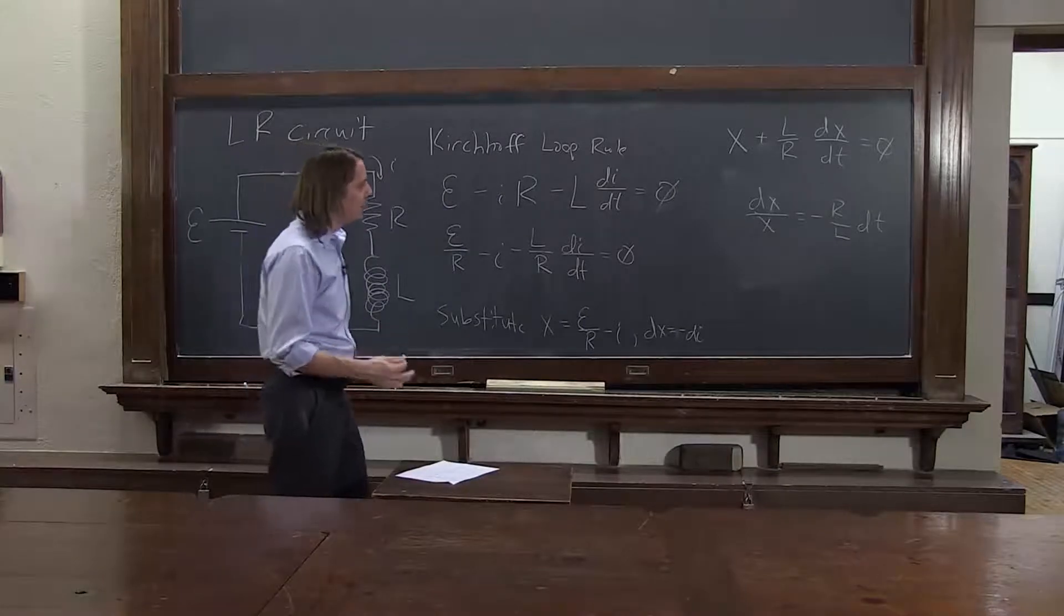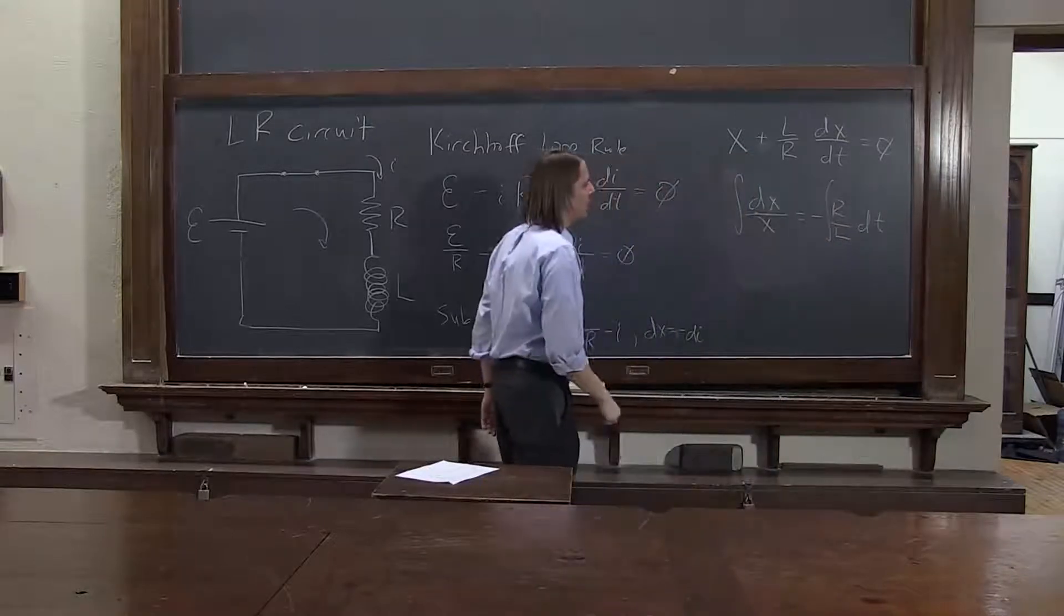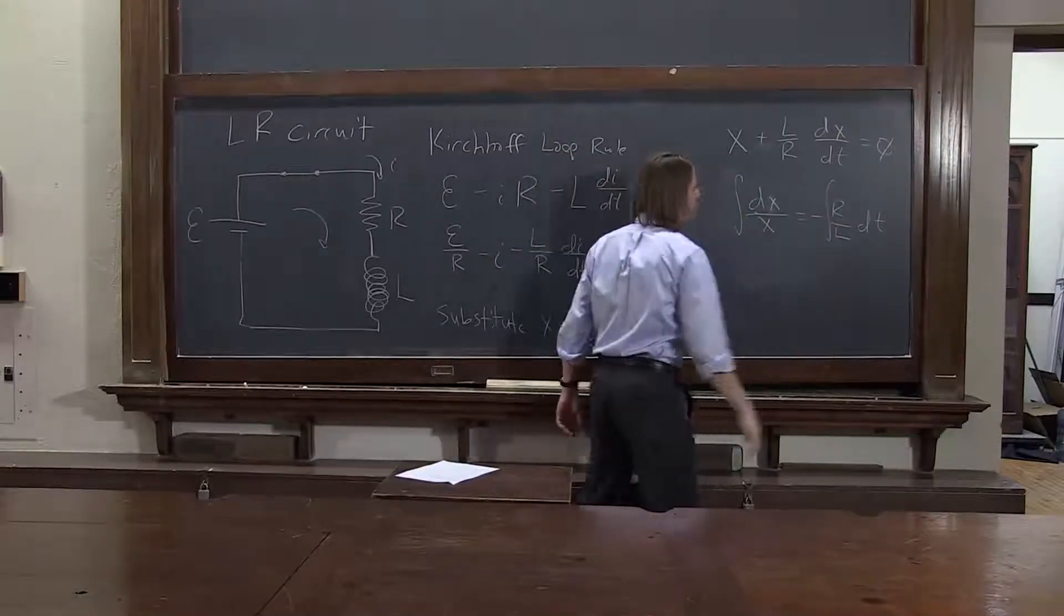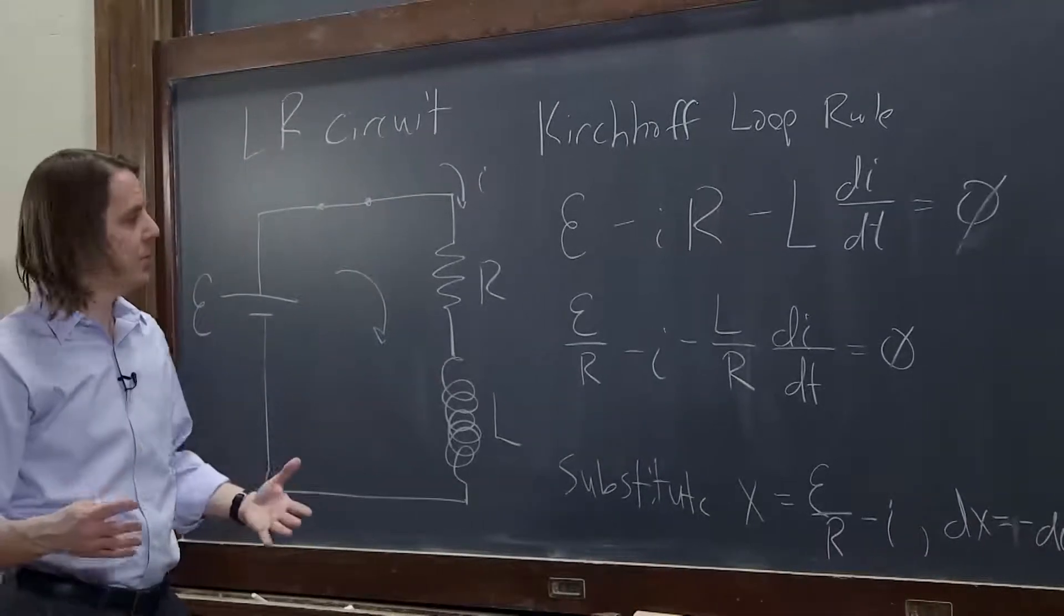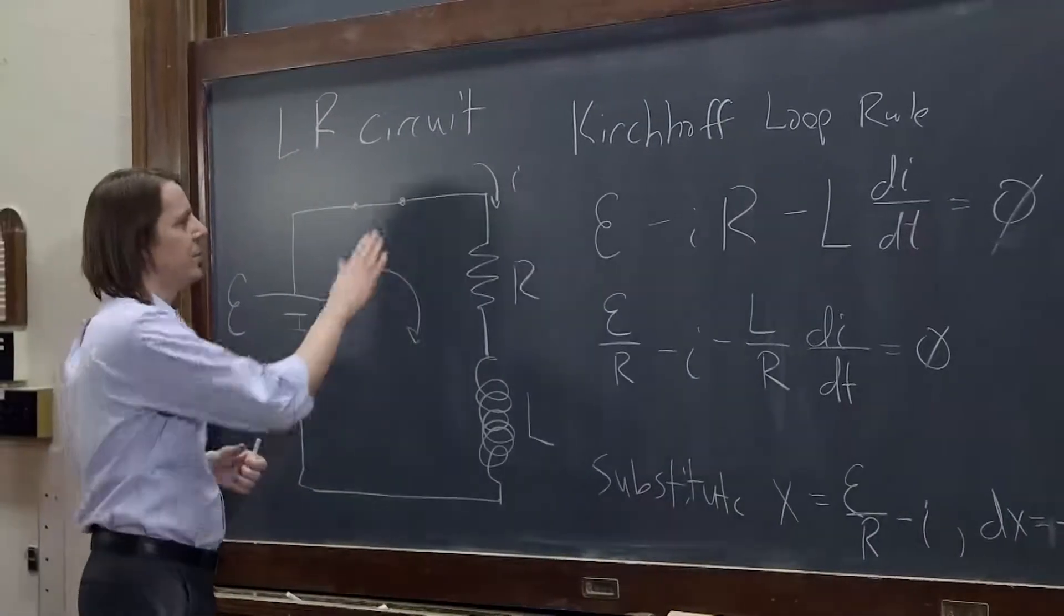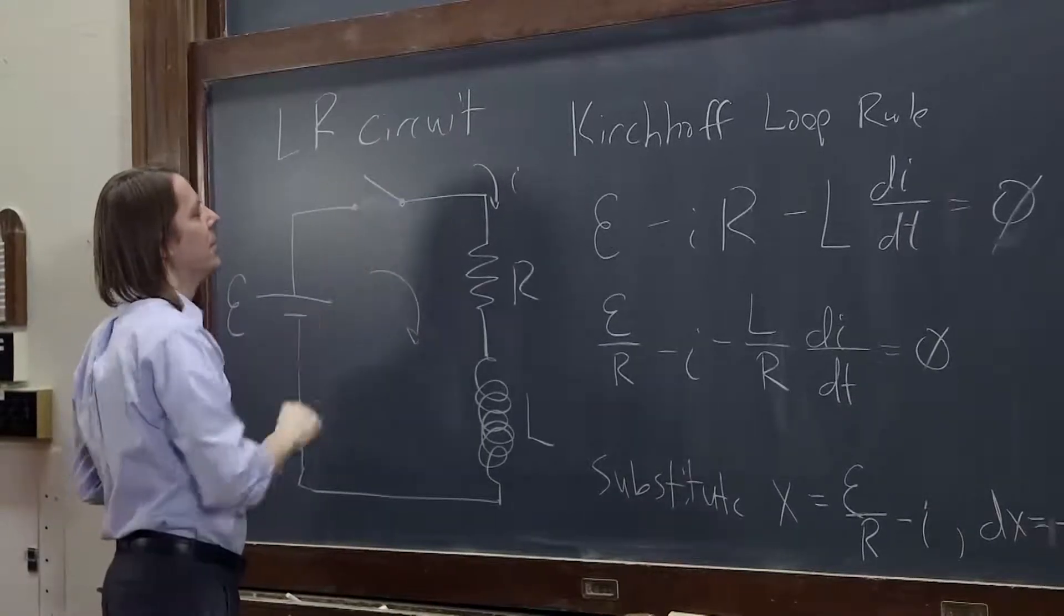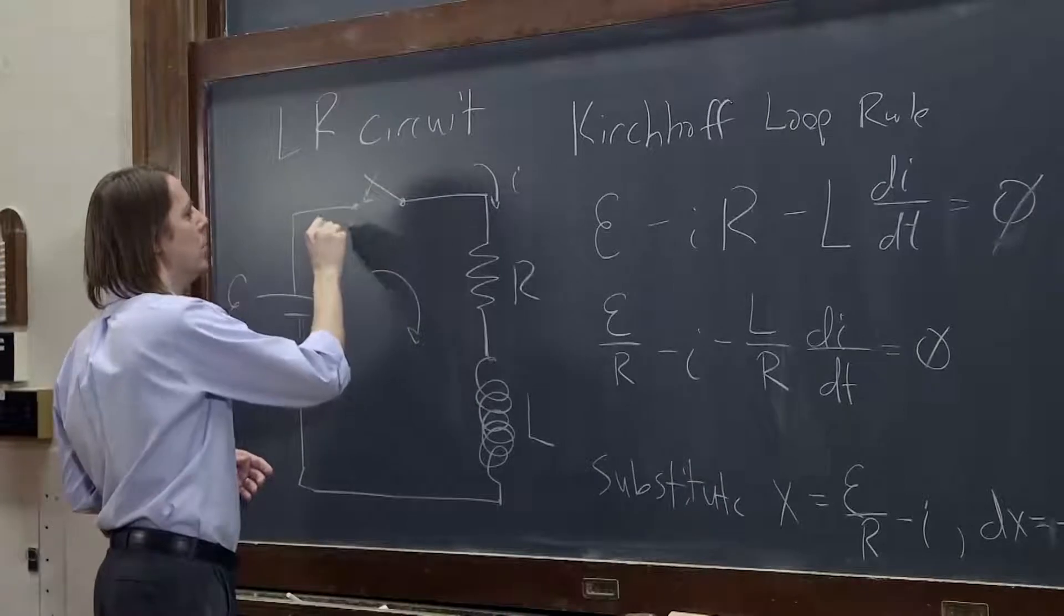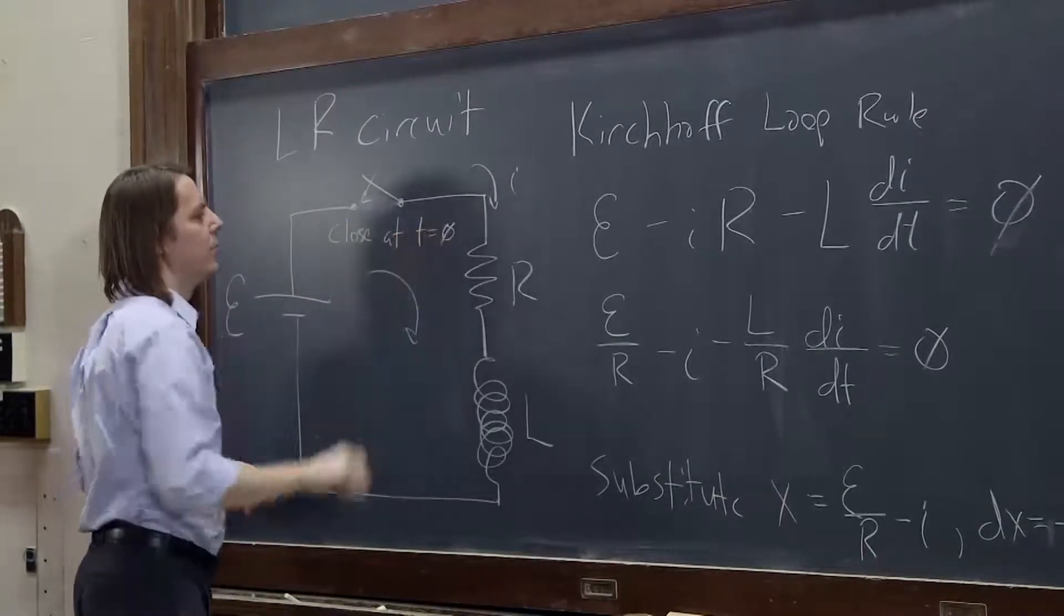Okay, and then now we integrate both sides. So, integrate. Here we're integrating with respect to x, here we're integrating with respect to time. And this is when we have to think about our initial conditions. This is why we have the switch here. So we say, actually, the switch is open, like this, and you close at t equals 0.